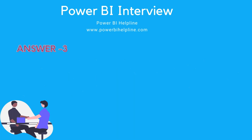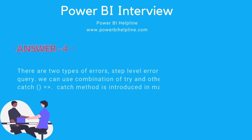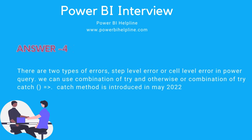Question number four: explain error handling methods in Power Query. There are two types of errors — step-level error or cell-level error in Power Query. We can use a combination of try and otherwise, or a combination of try-catch. The catch method was introduced in May 2022.